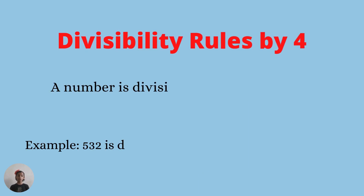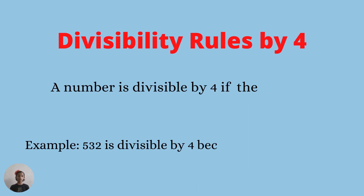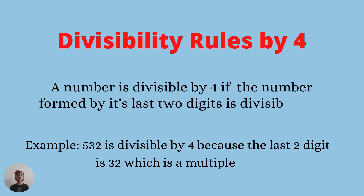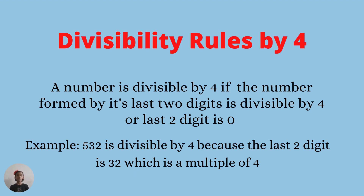Divisibility rule of four: a number is divisible by four if the number formed by its last two digits is divisible by four, or the last two digits are zero. Example: five hundred and thirty-two is divisible by four because the last two digits, 32, is a multiple of four.